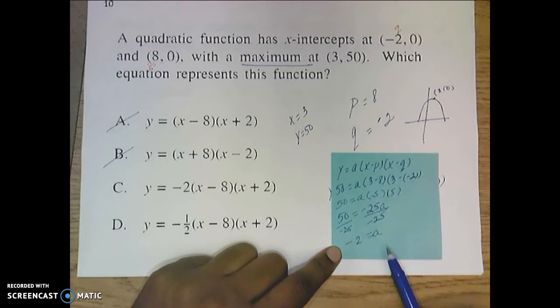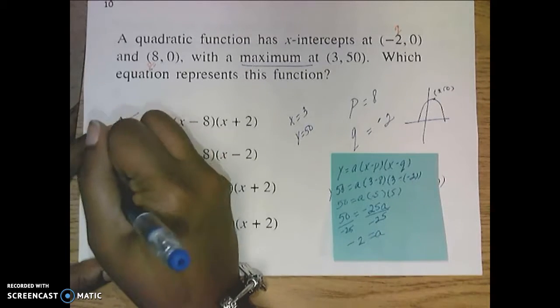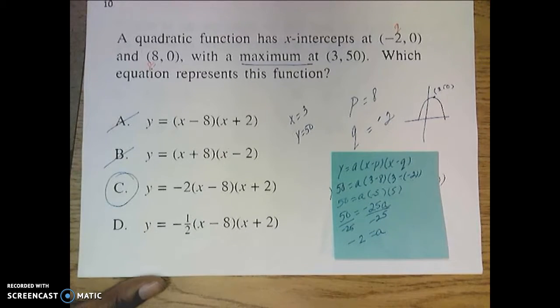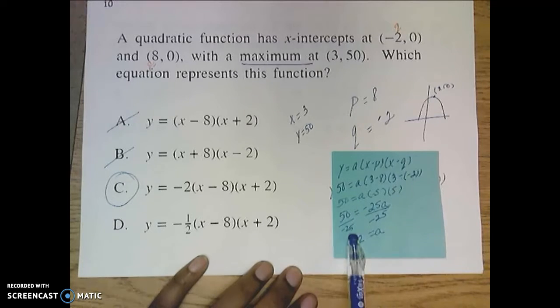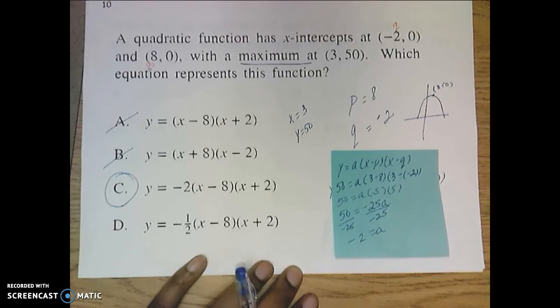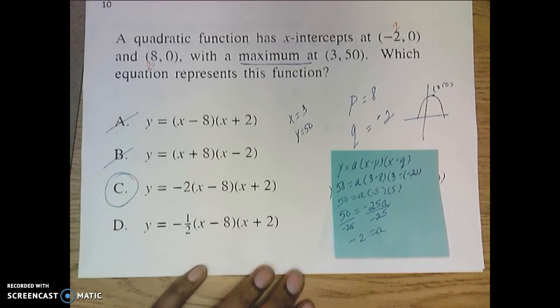So once you figure out what A is, C is going to be our answer. Now, what I want you to notice is that if you would have divided this the wrong way, you could have picked D. So make sure we pay attention to our signs and what we're doing.